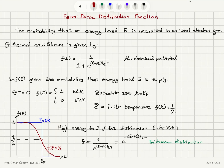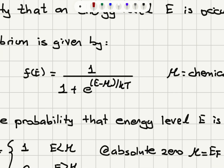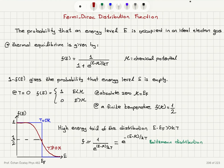Electrons are fermions, so they obey the Fermi-Dirac statistics, and the probability that an energy level E is occupied in an ideal electron gas at thermal equilibrium is given by the Fermi-Dirac distribution function, which is 1 over (1 + e^((E − μ)/kT)). Here E is our energy level energy, and μ is the chemical potential.